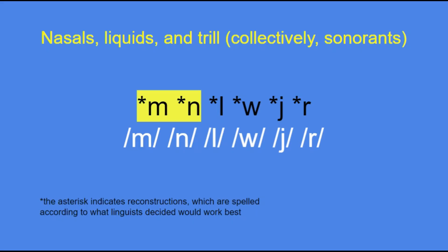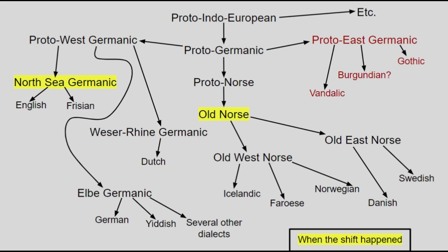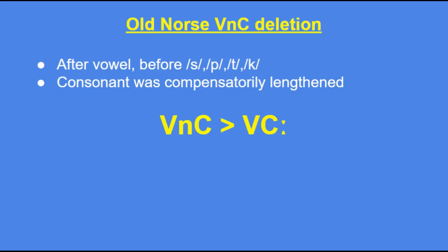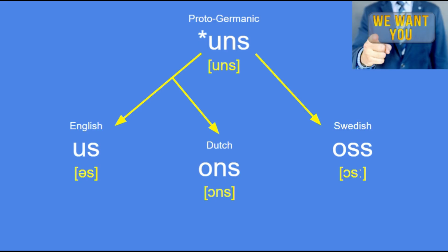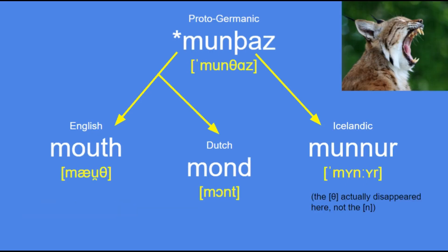Now let's look at how the consonants turned out, from easiest to most complicated. First, the nasals and liquids. Not a lot happened to the nasals — they often just stayed as they were, with one main exception. N disappeared before certain consonants, a change that happened in both Old Norse and Proto-North Sea Germanic but differently. In Old Norse it lengthened the consonant after it; in Proto-North Sea Germanic (pre-Old English and Frisian) it lengthened the vowel before it. For example, Proto-Germanic *uns became Dutch ons, but Swedish us and English us.